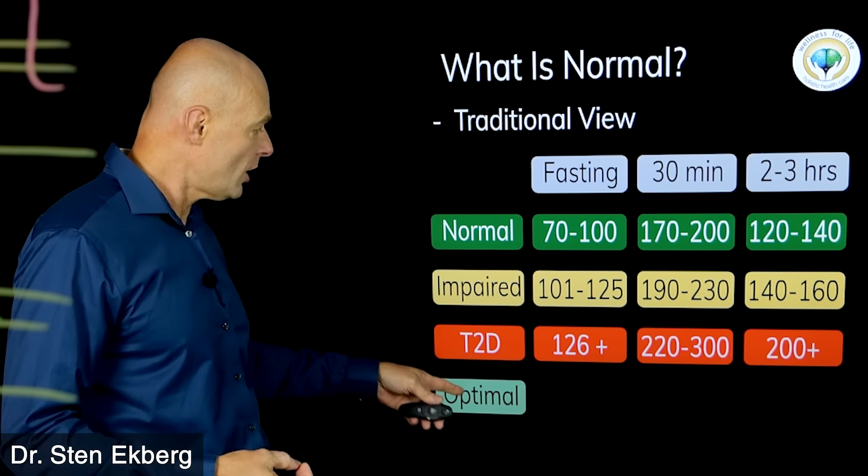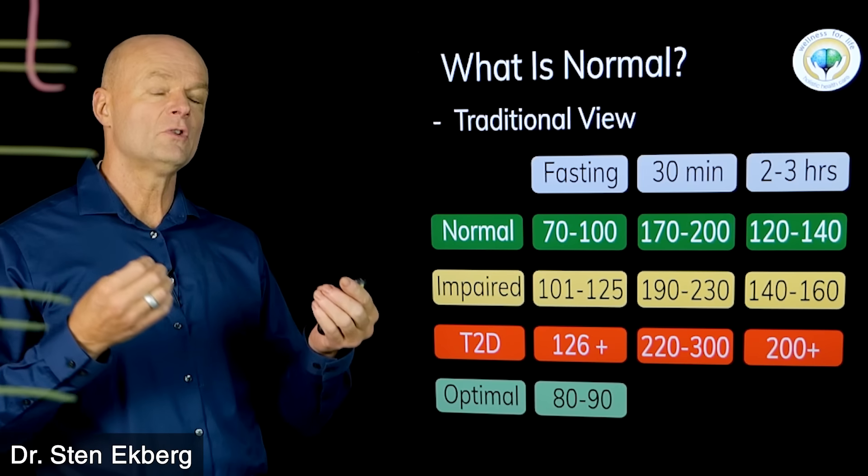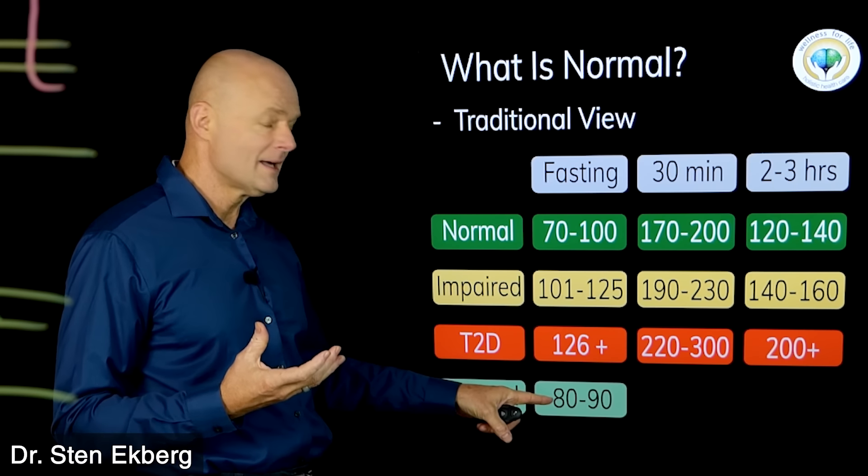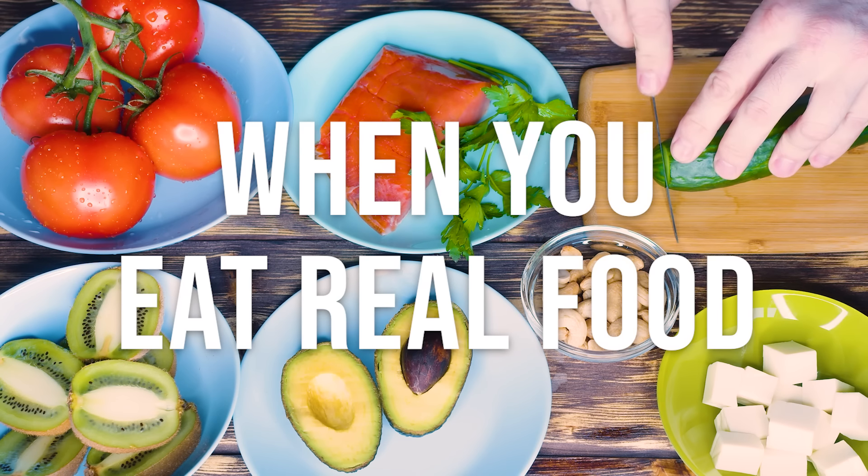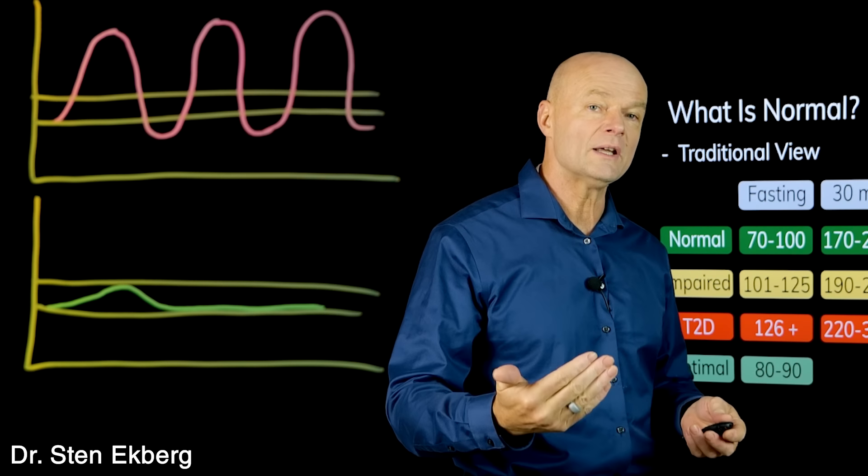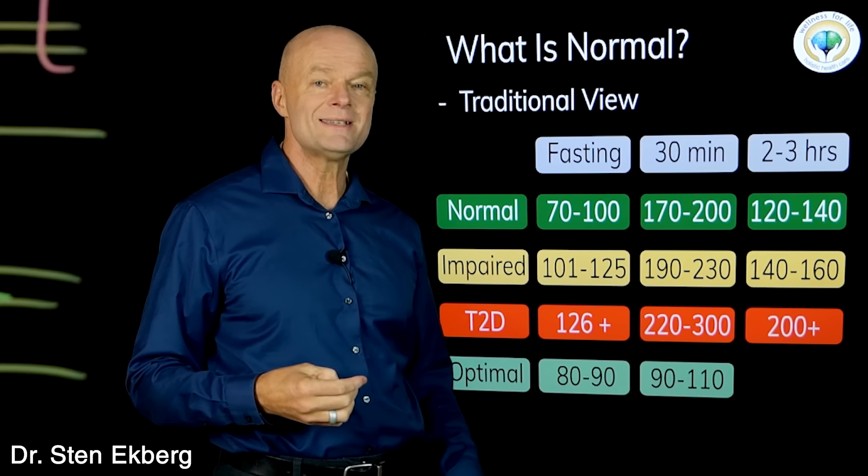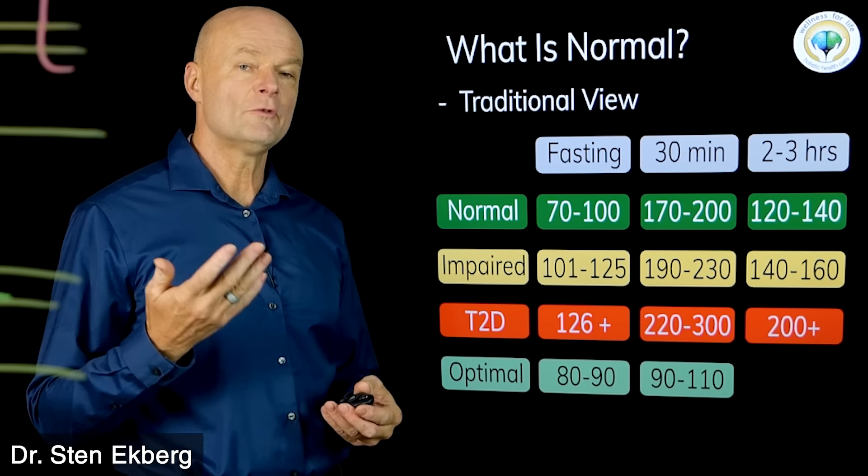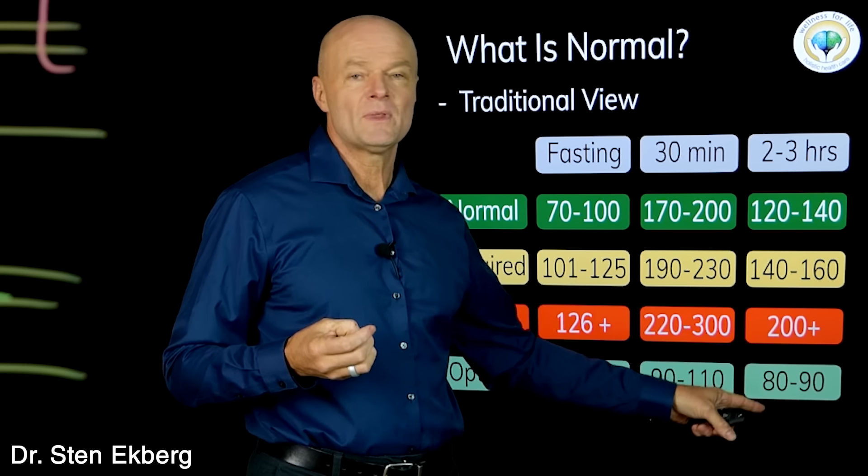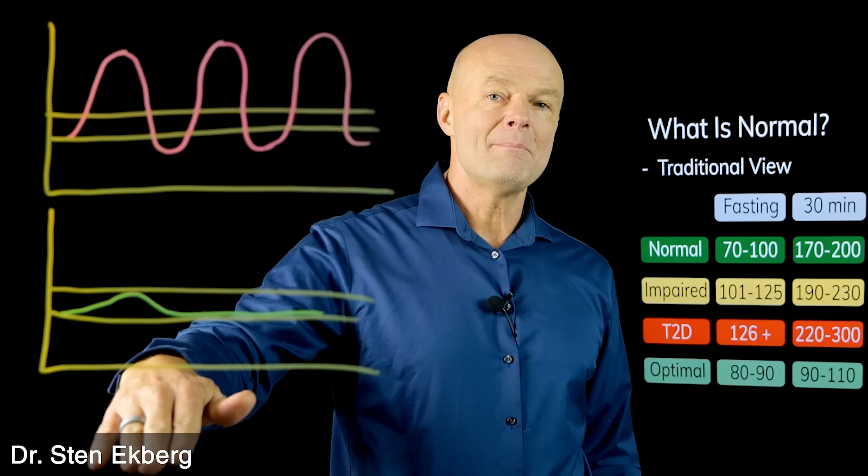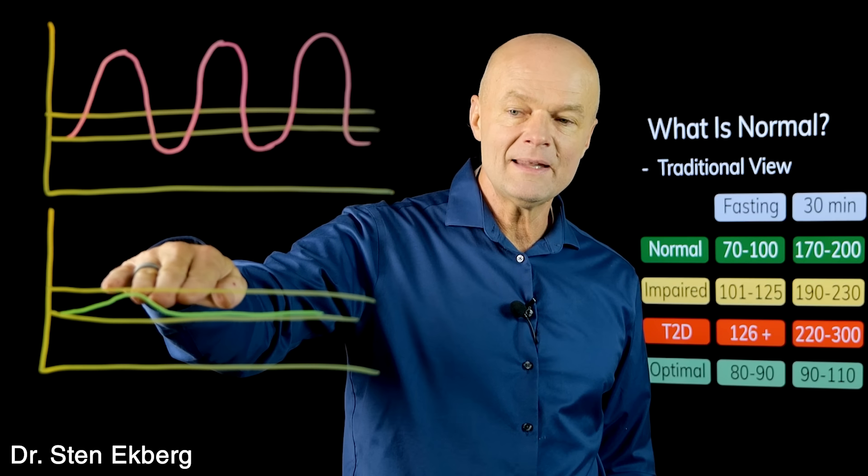Here's how it's supposed to work. An optimal level first of all is lower, it's 80 to 90. Or if you're fasting a little bit longer or on a low carb diet, it can even be totally okay to be less than 80, but fasting should really not be over 90. When you eat real food, something solid like putting a log on the fire that burns slowly for a long time, you can still be in this range even after eating. 90 to 110 is optimal. Two to three hours you should be back at your fasting level.